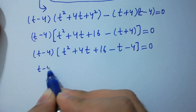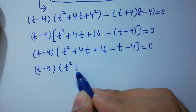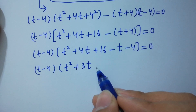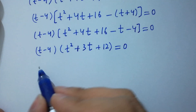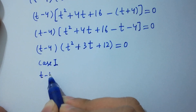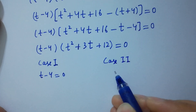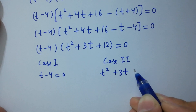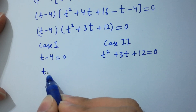So we have two cases. Case one: t minus 4 equals zero, giving t equals 4. Case two: t squared plus 3t plus 12 equals zero.